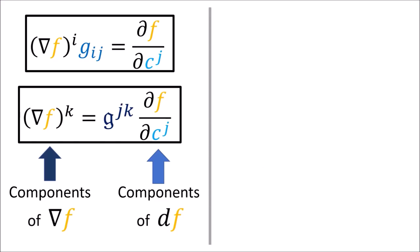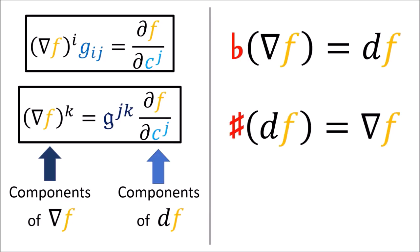One last point about notation: the normal way of switching between del f and df is done using the letter g for the metric tensor and inverse metric tensor. But there's also an alternative notation introduced in my video on raising and lowering indexes that uses the flat and sharp symbols from music. The flat operator can be used to change del f into df, and the sharp operator can be used to change from df into del f. This sharp-flat notation is a bit unusual but you might see it in some textbooks or online articles.